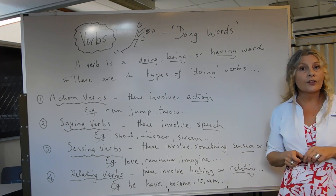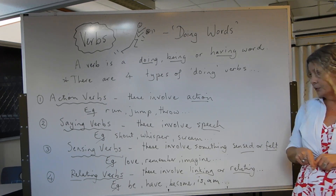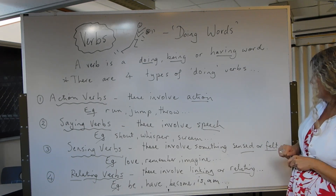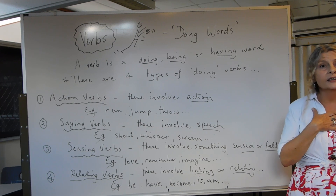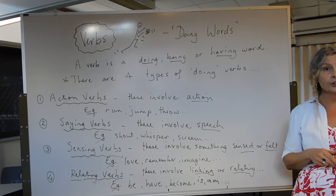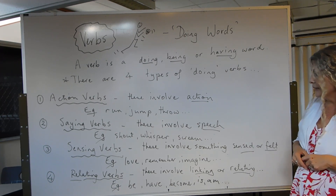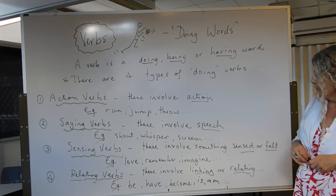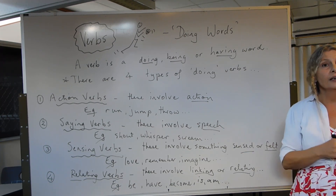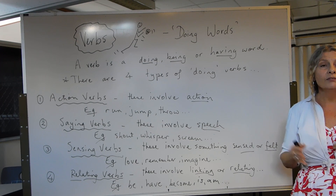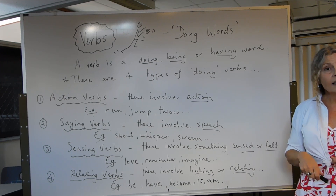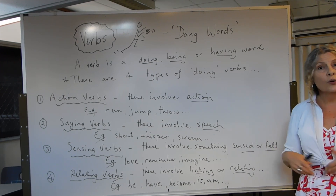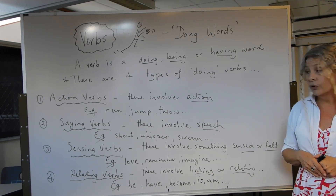Sensing verbs are the third type of verbs. These involve something being felt or sensed and relate to emotions. For example, love, remembering, imagining, reflecting. And again, these words are important in our writing.